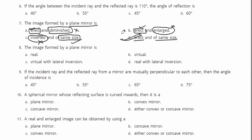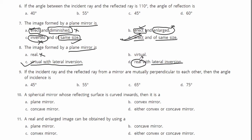Next is question number eight. The image formed by a plane mirror — in a plane mirror a virtual image is formed. Looking at the options: option B says only virtual, but option C says virtual with lateral inversion, which gives more complete information. Option D says real with lateral inversion, but it is not real — it is virtual. So we will mark option C: virtual with lateral inversion, as the correct answer.